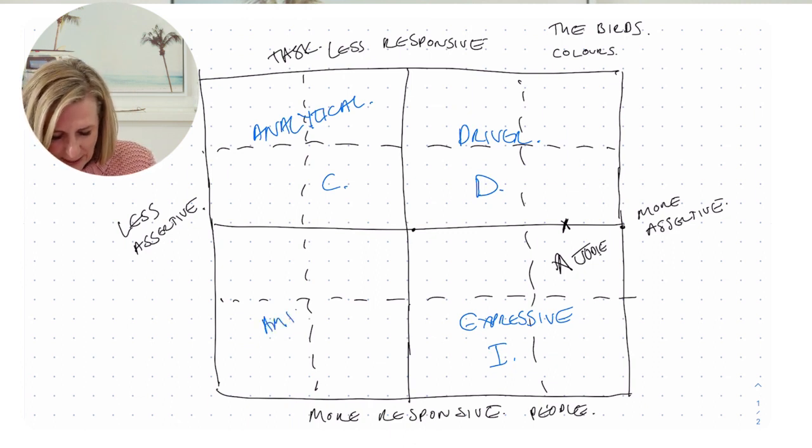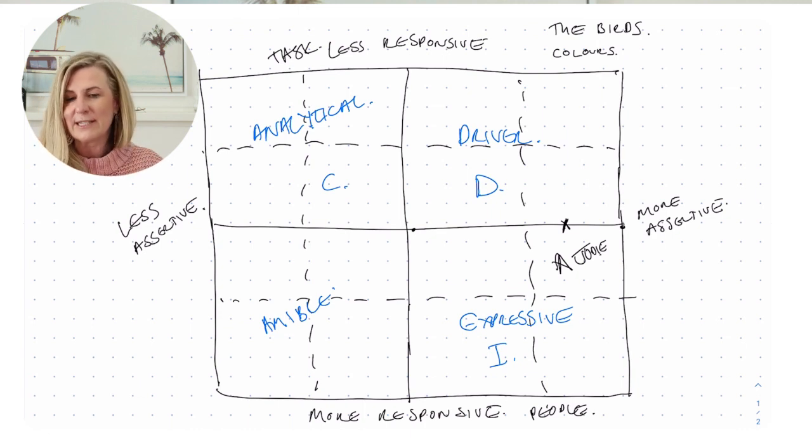And then finally, we have your amiables. So the amiables are less assertive like the analyticals. They like to think, they like to do their homework. They don't like to make rash decisions. But like the expressives, they're more about the people than the task. So they'll do the homework and the research focused on, is this good for our people? Amiable people are like what we would call the unsung heroes. They want to bring everyone along for the journey. They're very inclusive. They're very considerate. They're an excellent team player. They'd much rather be behind the wings, working in the muck with the team rather than front and centre on the stage selling the story or being the showman.